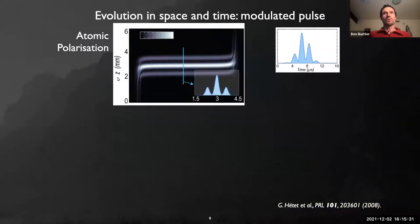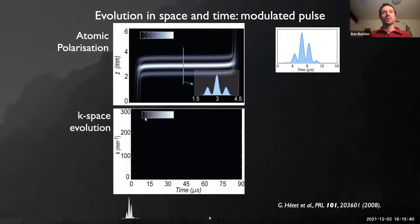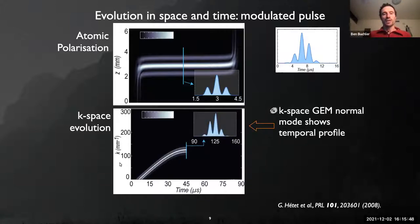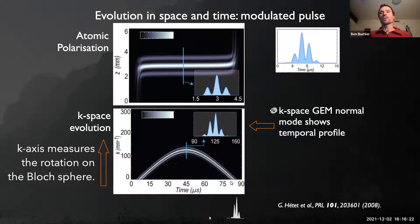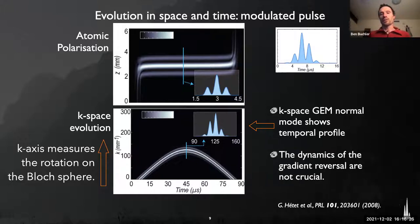Looking at the atomic polarization (coherence between ground states) for a modulated Gaussian pulse, we see the Fourier transform - a carrier in the center with two sidebands. In k-space, the Fourier transform of each slice along the memory plotted versus time shows the temporal profile of the pulse. When everything re-phases at k=0, the light pops out. These Fourier properties will be important later when discussing stationary light.